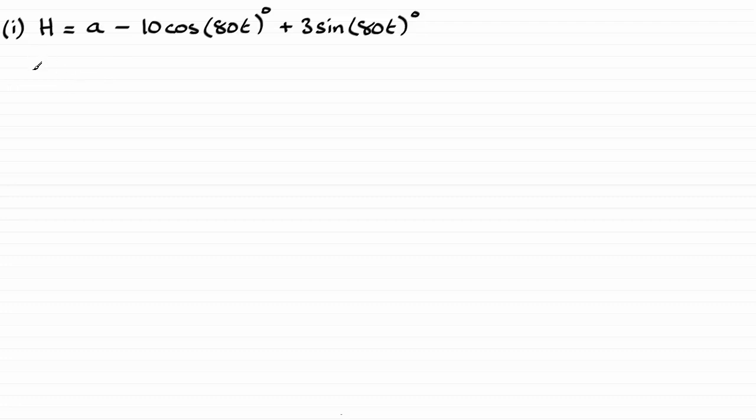Now we're given that the height of the passenger is one meter initially. So that's going to be when t equals zero. And all you need to do then is substitute t equals zero into here and figure out what a is.